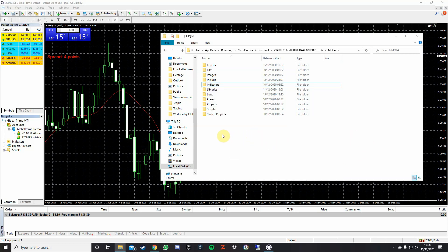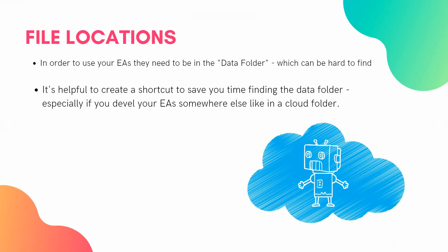To summarize: your EAs need to be in the data folder, accessed via File > Open Data Folder. Create shortcuts to your MQL4 Experts and Indicators folders to save time — it's difficult to navigate there manually. I like to store mine on a cloud drive, which gives extra peace of mind that if something happens to my computer I won't lose all my handcrafted EAs.